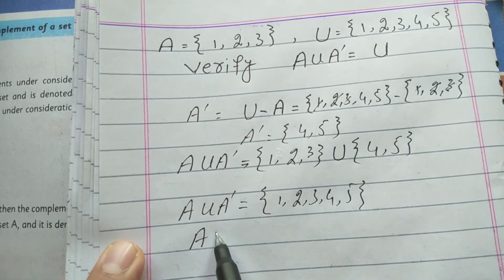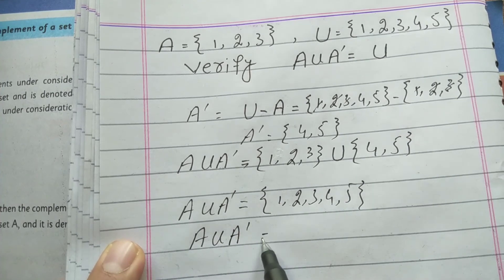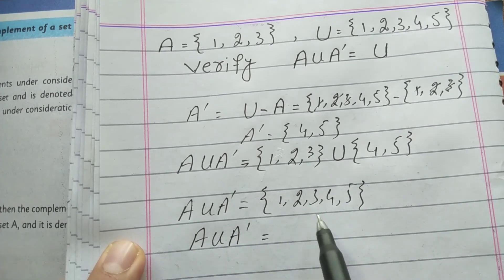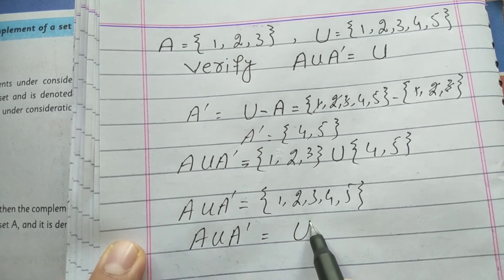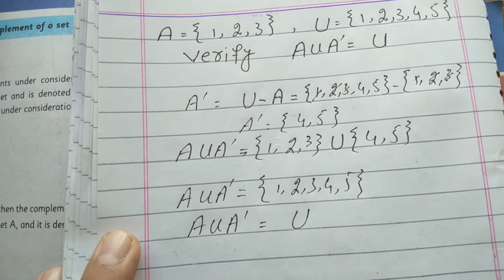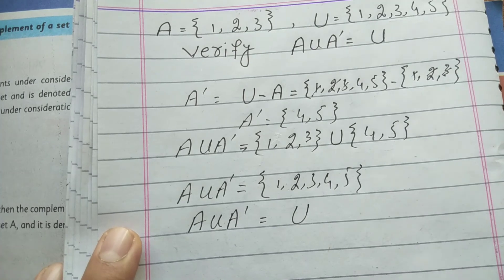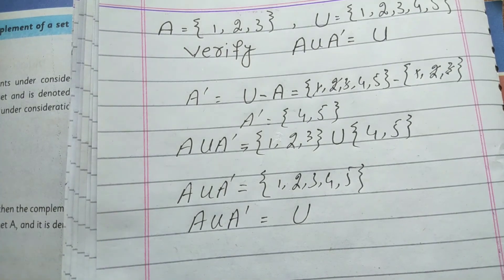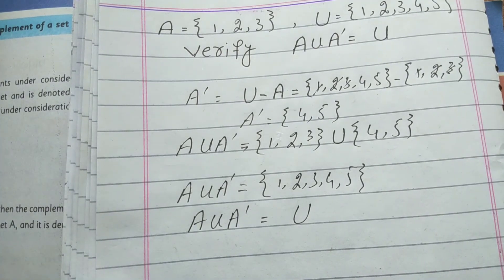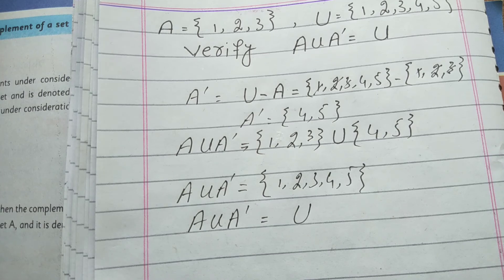A union A complement equals {1, 2, 3, 4, 5}, which is equal to the universal set. So we have verified that A union A complement equals the universal set. Please subscribe to my channel for more interesting videos. Thanks for watching.